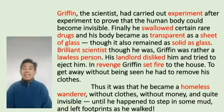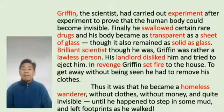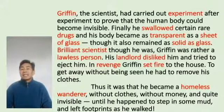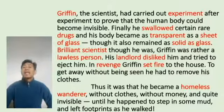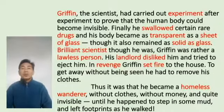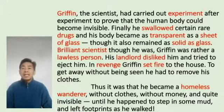Griffin, the scientist, had carried out experiment after experiment to prove that the human body could become invisible. Finally, he swallowed certain rare drugs and his body became as transparent as a sheet of glass, though it was also as solid as glass. Brilliant scientist though he was, Griffin was rather a lawless person. His landlord disliked him and tried to eject him, so in revenge Griffin set fire to the house. To get away without being seen, he had to remove his clothes.